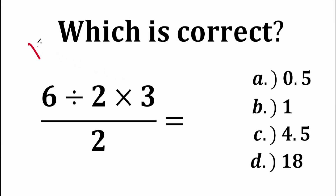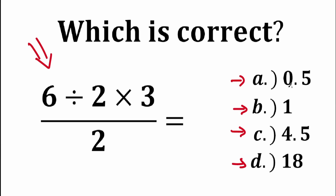Let's solve this question. We have 6 divided by 2 times 3, and we divide all of this by 2. It seems pretty basic, seems pretty easy. However, many people are going to get this problem incorrect. So if you could do this without a calculator, just pause this video and write your answer down into the comment section. Right here we have four options: Option A is 0.5, Option B is 1, Option C is 4.5, and Option D is 18. This is a great test to check your basic math and algebra skills.